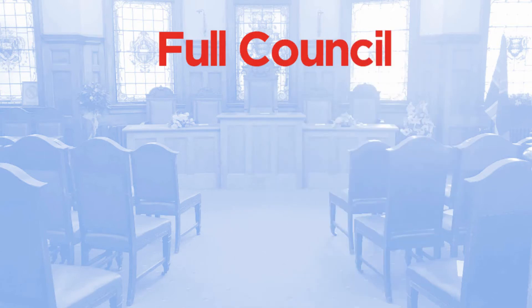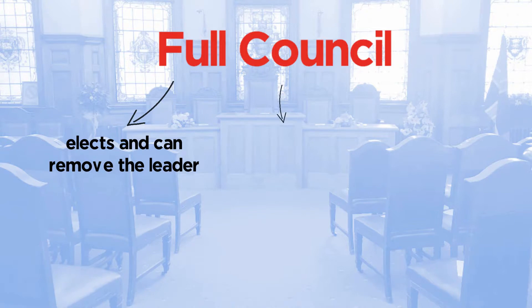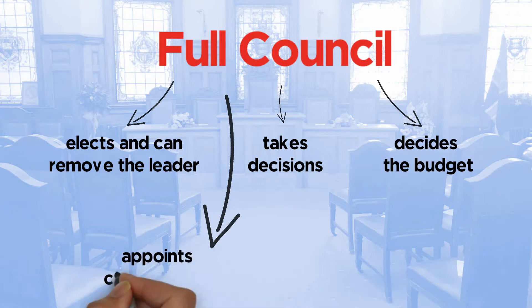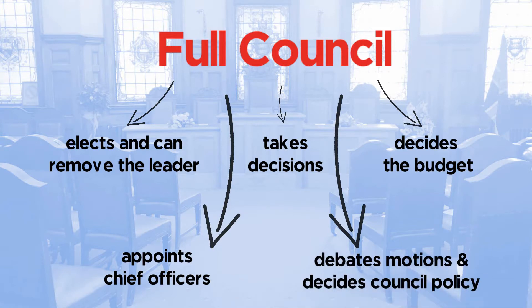Full council is the meeting of all councillors held every few months and is the ultimate decision making body of the council. Full council elects and can remove the leader of the council, takes decisions over the constitution and bylaws, decides the budget, appoints the chief officers, debates motions and decides council policy — the policy framework. No individual or committee within the council can override full council, providing it is acting within its powers.